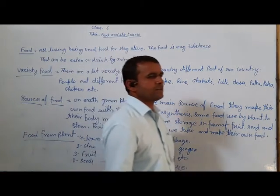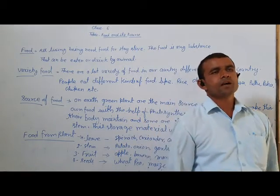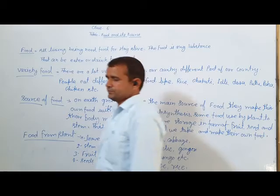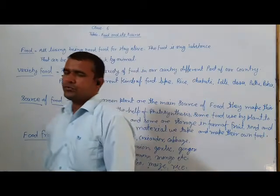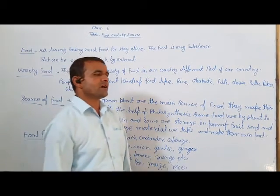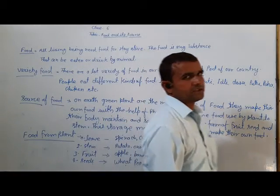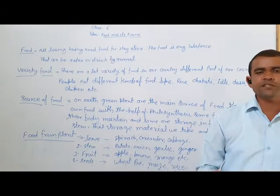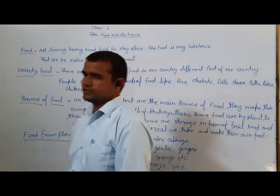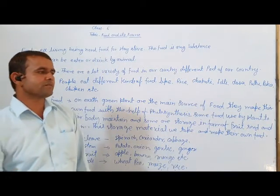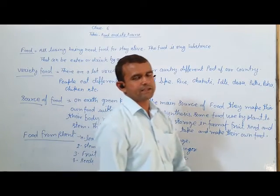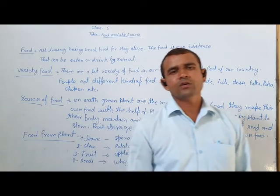And some food materials plants store in their body, in the form of leaves, stems, flowers, fruits, and seeds. We take these stored materials and make our own food.